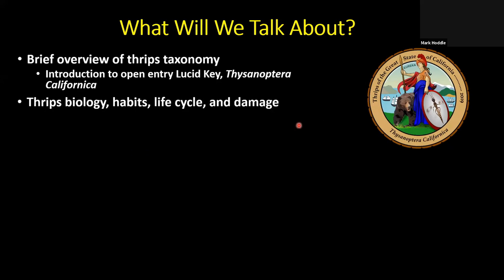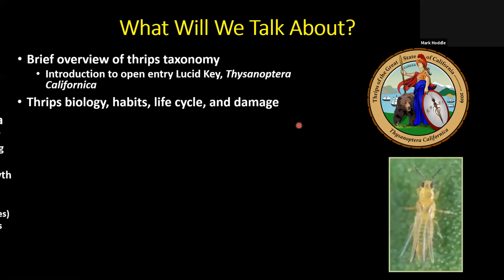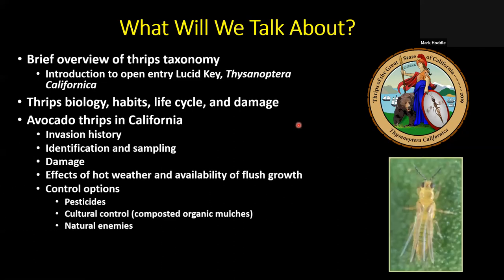We'll cover thrips biology, aspects of their habits, life cycle, and the types of damage that they cause. Then we'll drill down into the avocado thrips and the problems it has caused to the avocado industry in California. We'll cover its invasion history, identification, how to sample for this insect, the types of damage it causes, the effects of weather — especially hot weather — and the availability of flush growth in avocado orchards and how this drives avocado thrips outbreaks. Then we'll look at control options: pesticides, cultural controls, composted organic mulches for suppression of thrips pupation rates, and the efficacy of natural enemies.